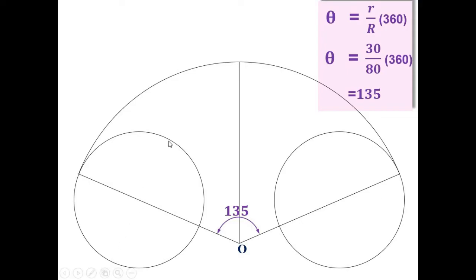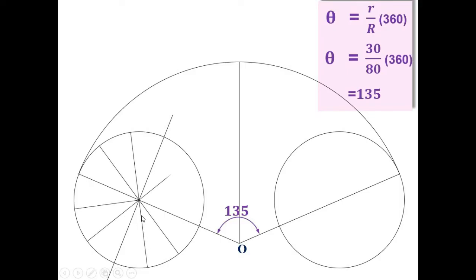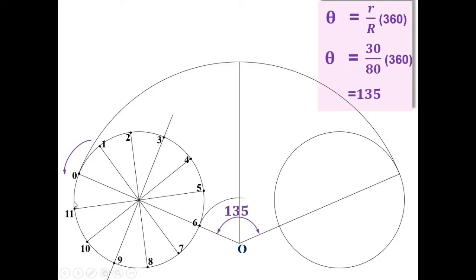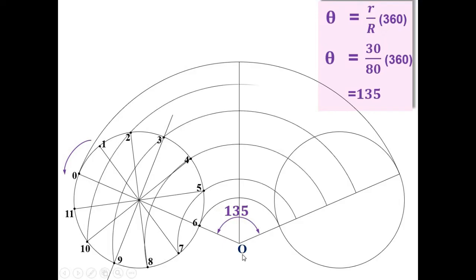Draw a line normal to the vertical line and passing through the center of the rolling circle, then divide it into 12 equal parts with the help of a protractor. Give the names 0, 1, 2, 3, 4, 5. Assuming the rolling circle rolls in the anti-clockwise direction, the initial contact point of the rolling circle and directing circle is named 0, and the numbering continues in the clockwise direction. Then draw the arc passing through all these points with O as the center.